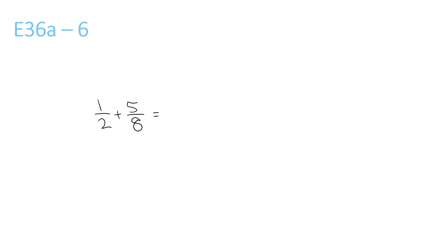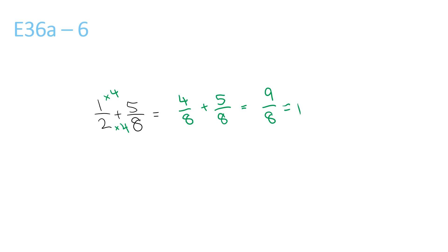The LCM of 2 and 8 is 8, 1 times 4 and 2 times 4, so it's 4 over 8, plus 5 over 8, equals 9 over 8. 8 goes into 9 once, remainder 1 over 8.